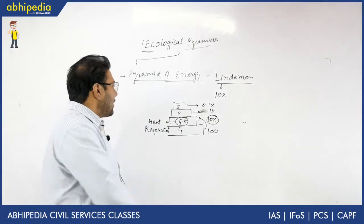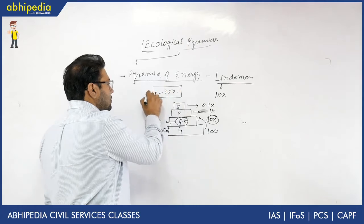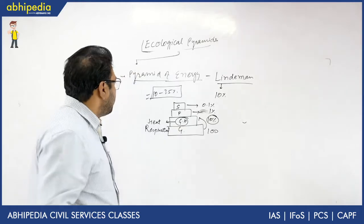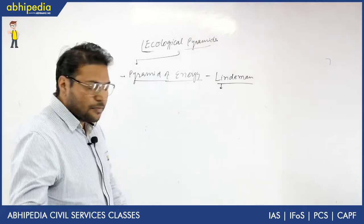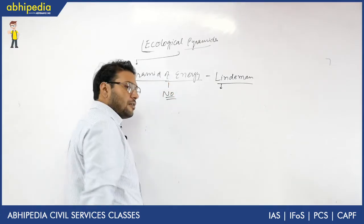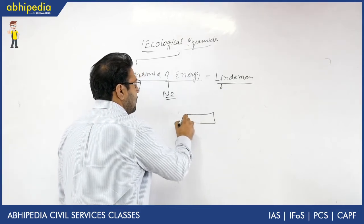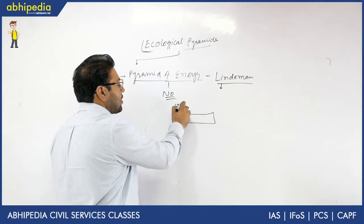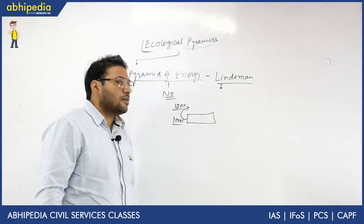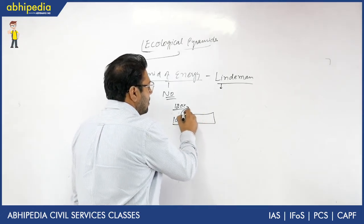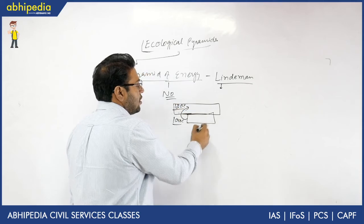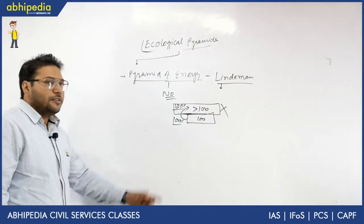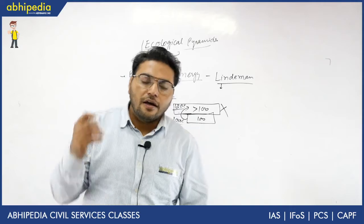Can a pyramid of energy be inverted? No, it cannot. The reason is that energy can only decrease as it moves up trophic levels — it is not possible for a higher trophic level to have more energy than the level below it. If it were inverted, the upper level would need to be broader, meaning it would need more than 100% of the energy from the lower level, which is impossible. Therefore, the pyramid of energy is always upright, every time.